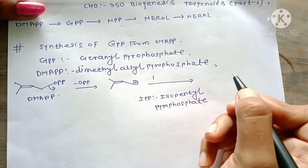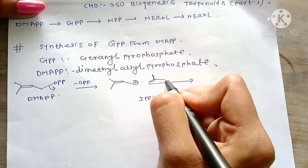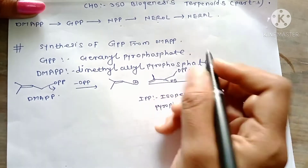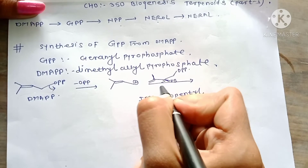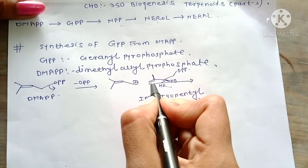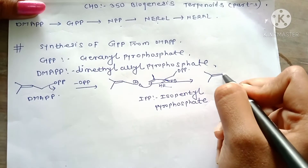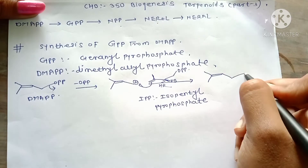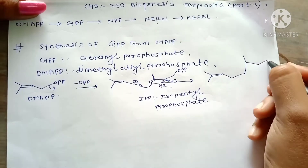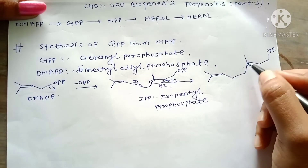The structure of IPP is CH3 double bond CH2-CH2-CH2-OPP. Here, there are stereospecific hydrogens HS and HR. The double bond shifts and formation of CH3-CH3-CH3-CH2-CH2-CH2-CH2-OPP occurs, with a positive charge forming a tertiary carbocation.